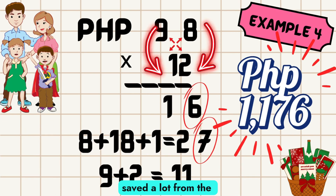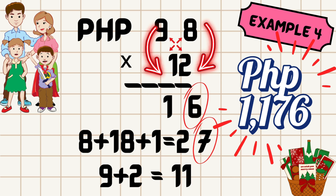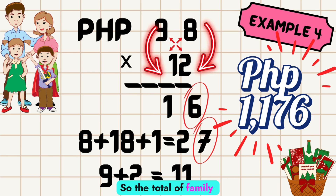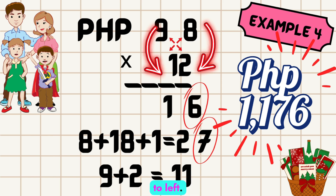Now since you've saved a lot from the voucher, you might as well get something for your family. You went to the gift gate store and decided to buy some cute gift sets for each of your family members. You have three siblings, all married with two kids for each family. The gift basket in the supermarket costs 98 pesos, so the total number of family members is 12 — that is husband, wife, and two children, which equals 4 times 3 siblings.